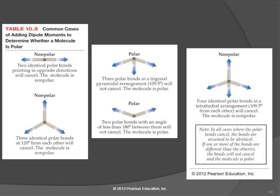The tetrahedral shape is only non-polar if the four elements on the outside are all the same.